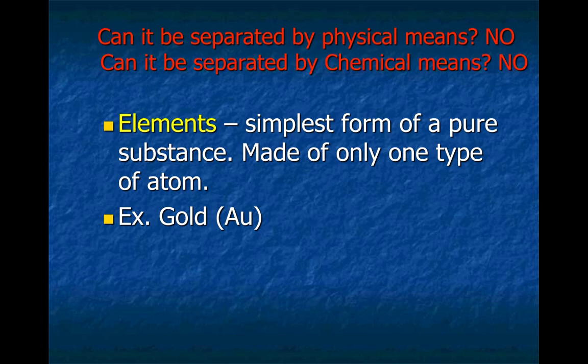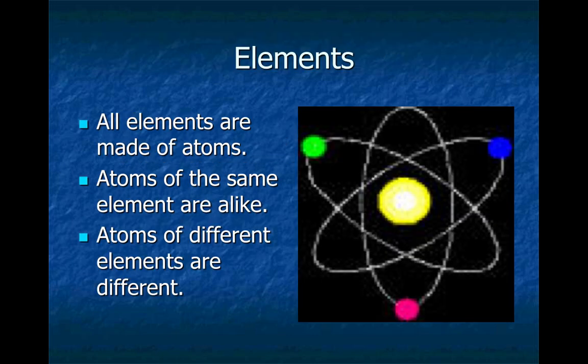So for elements, it cannot be separated by physical means, and it cannot be separated by chemical means. That's what differentiates an element from a compound. But they both cannot be separated by physical means, which makes them both substances. Elements are made of atoms. Atoms are all the same. And atoms of different elements are different. So if we were to look at an atom of gold versus an atom of silver, they would have different numbers of subatomic particles, and that's what makes them unique.